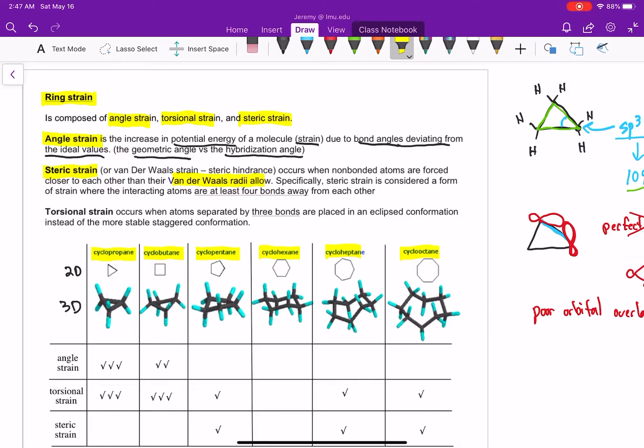If those are closer to each other than they want to be, because the electrons are all negative, they're going to repel each other, causing strain. Specifically, steric strain is defined when we have interacting atoms that are at least four bonds away. Steric strain is when we have atoms that are four bonds away.